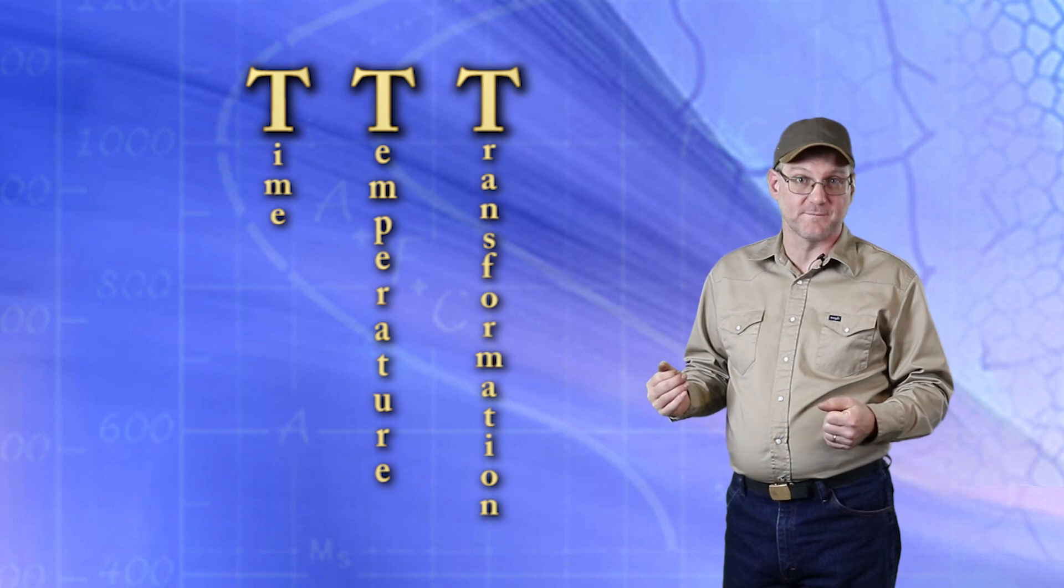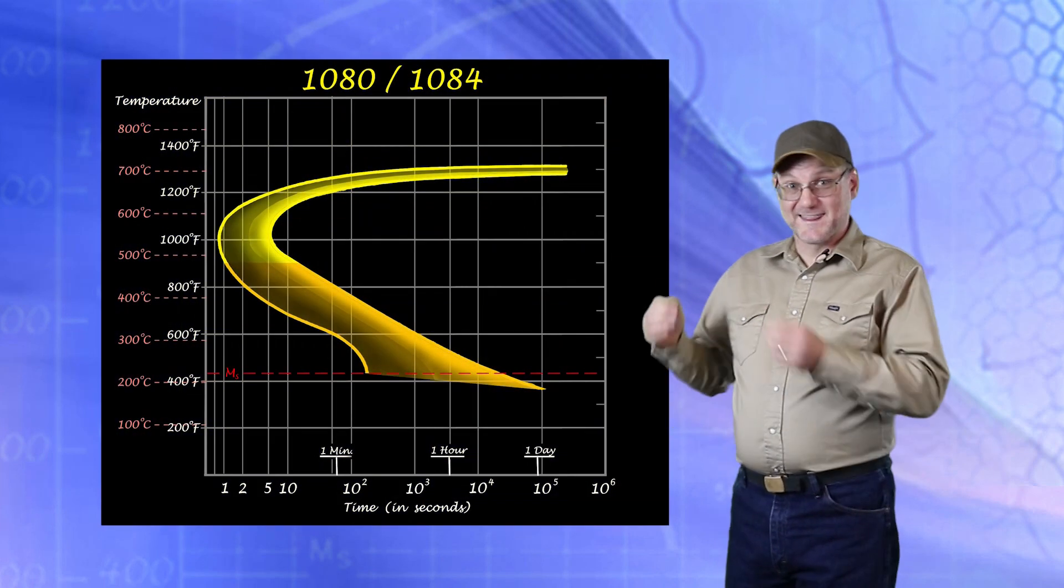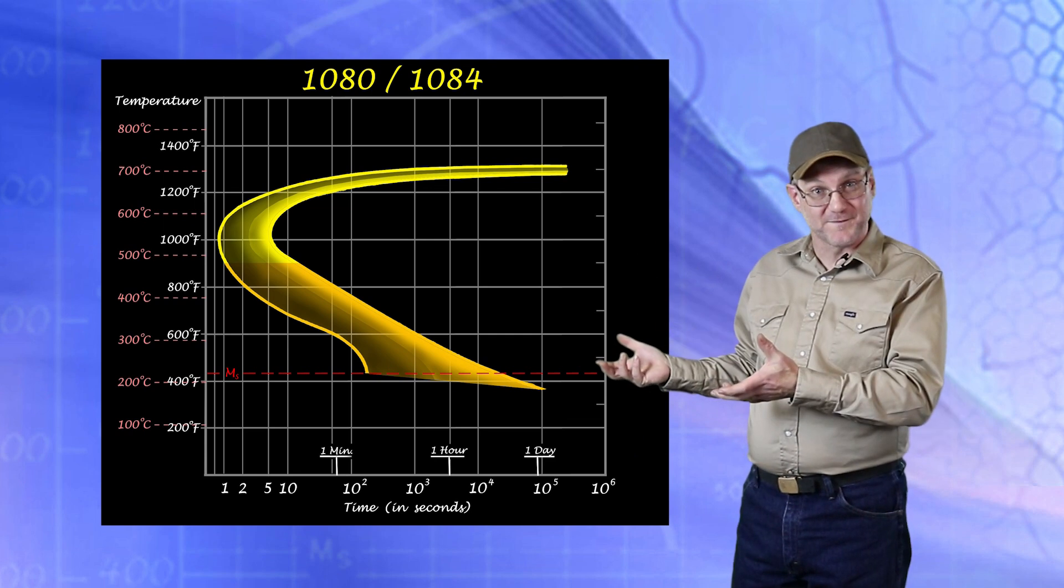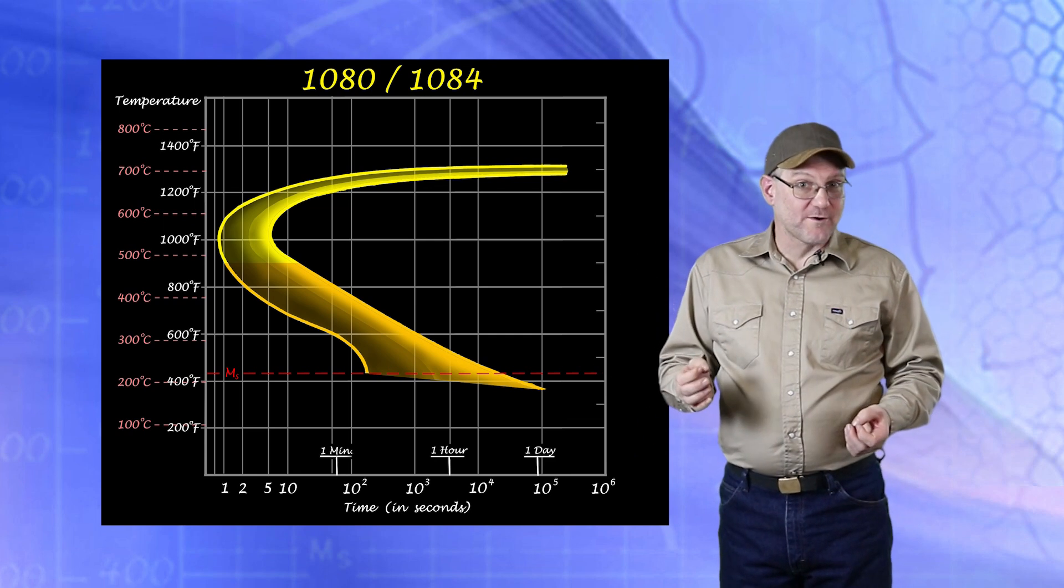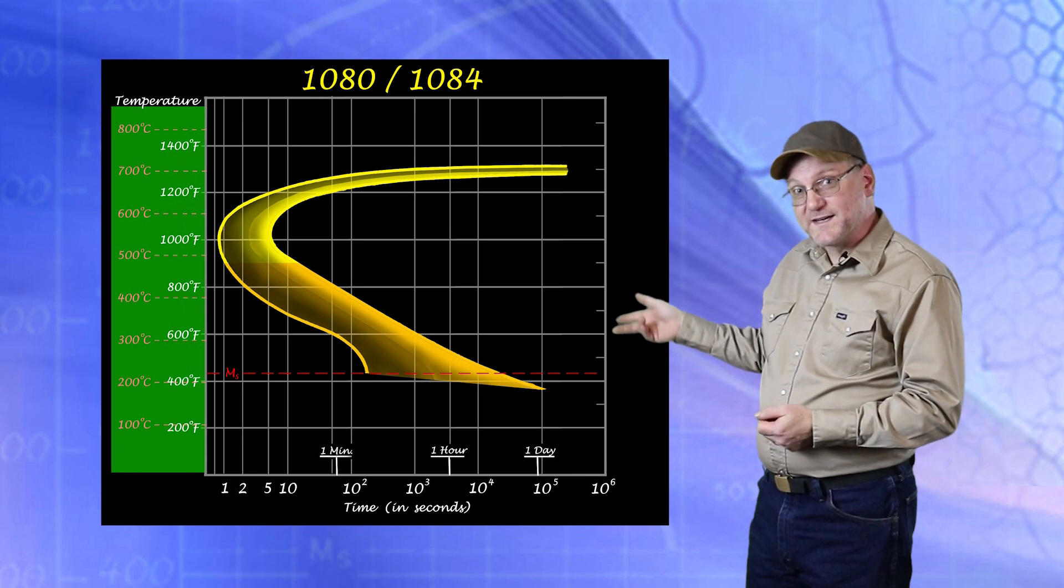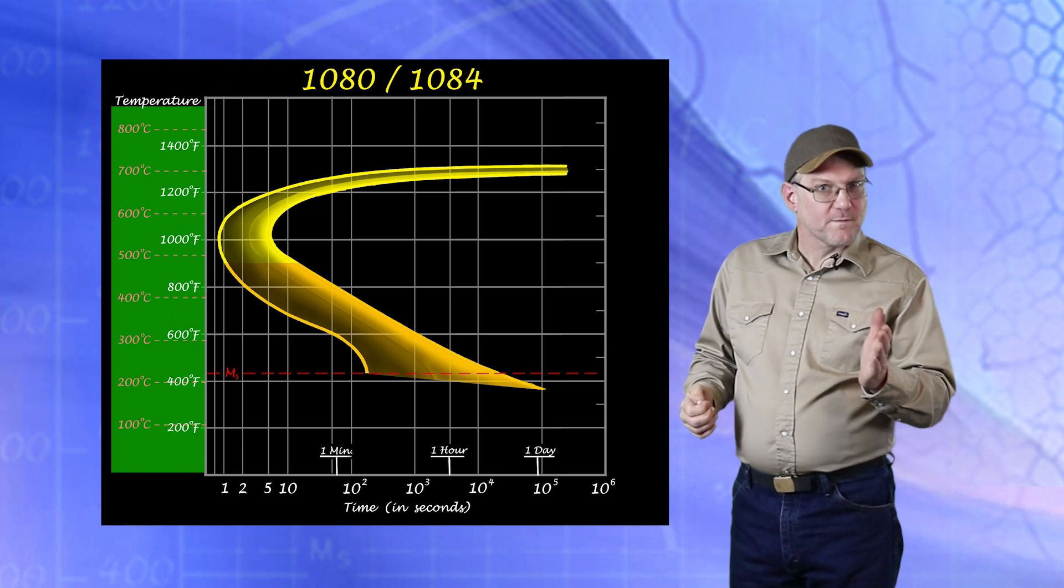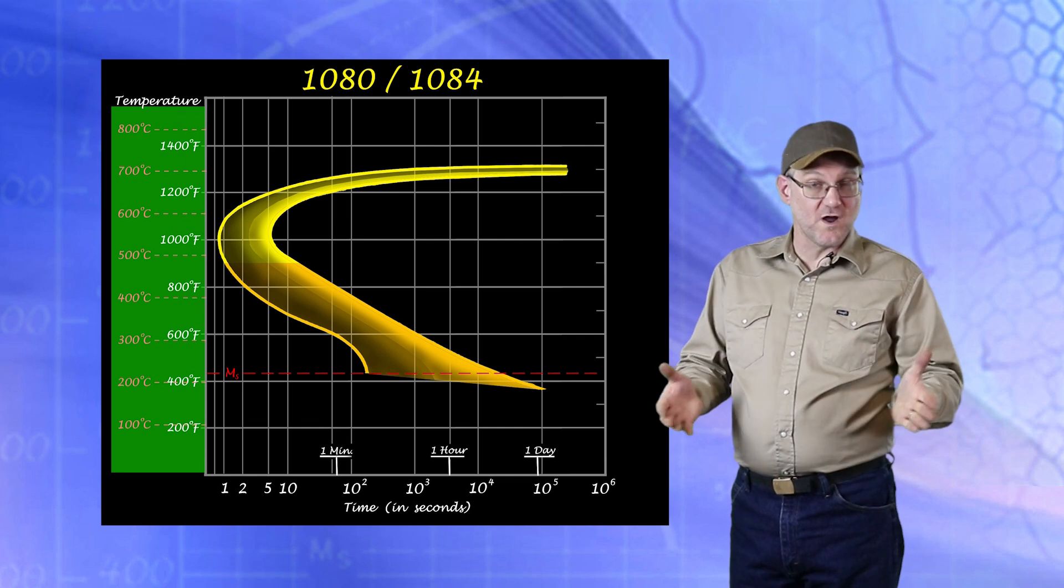Like the other diagram, along the left hand side is a column showing the temperature. But since the carbon content and chemistry is known and set specifically to this chart, instead of carbon or chemistry along the bottom there is time in seconds.